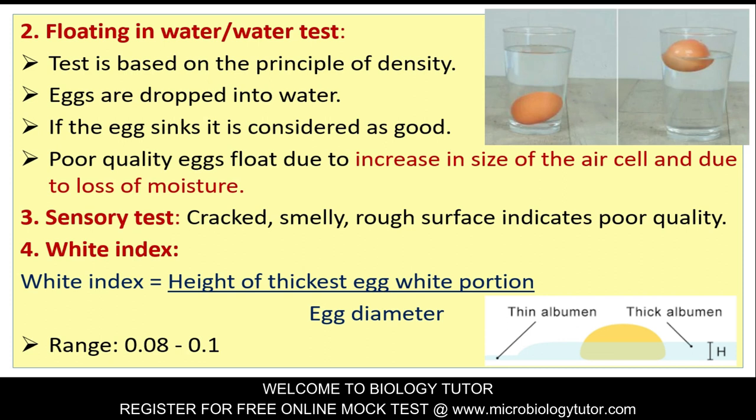White index: White index is calculated as the height of the thickest egg white portion divided by the egg diameter. The usual range is 0.08 to 0.1.